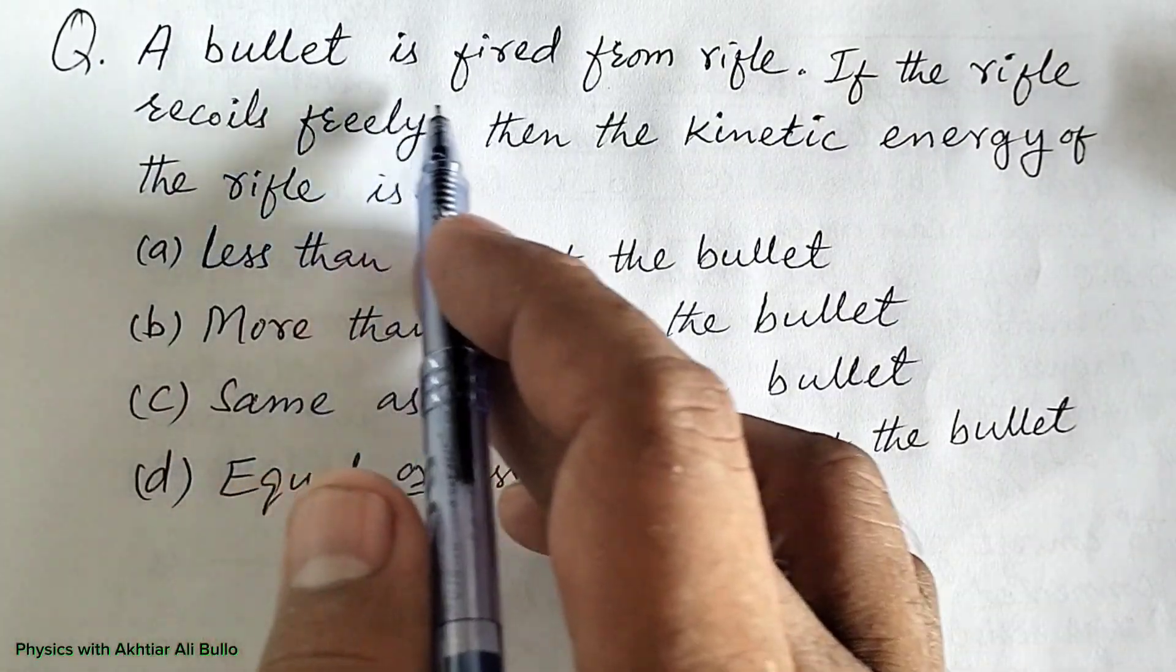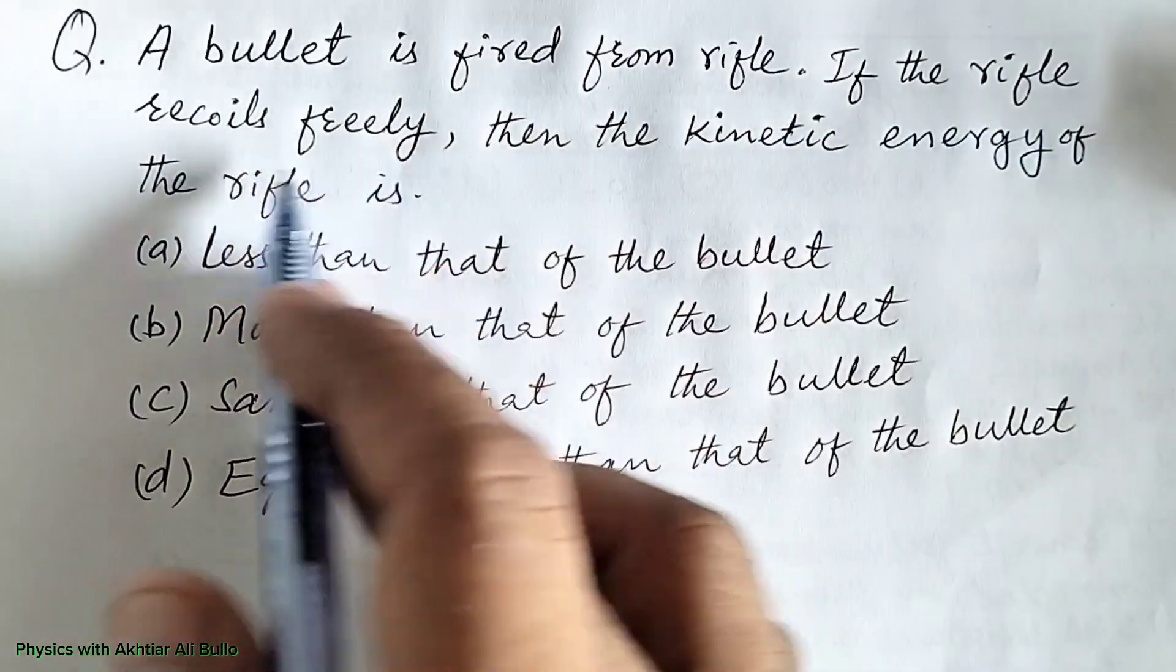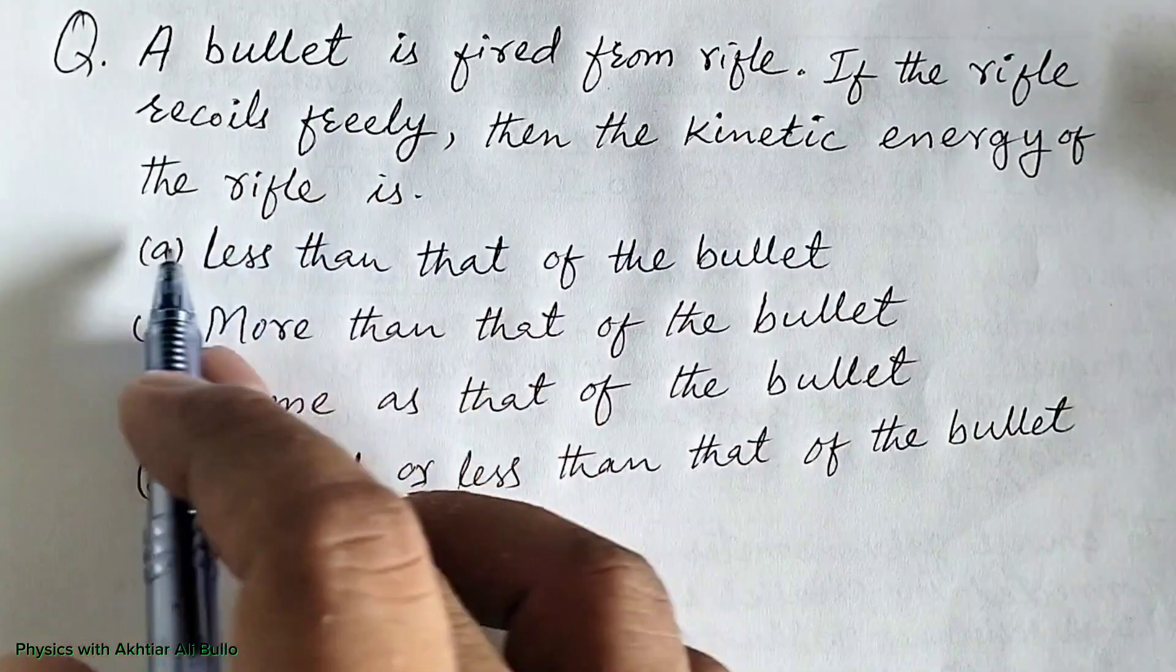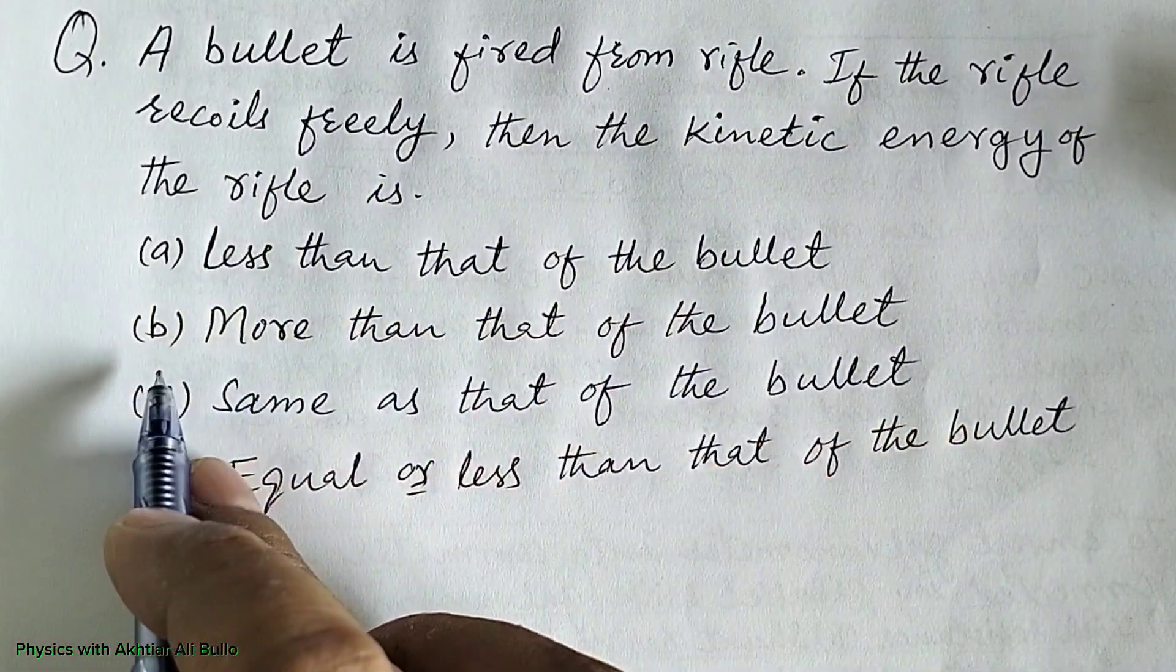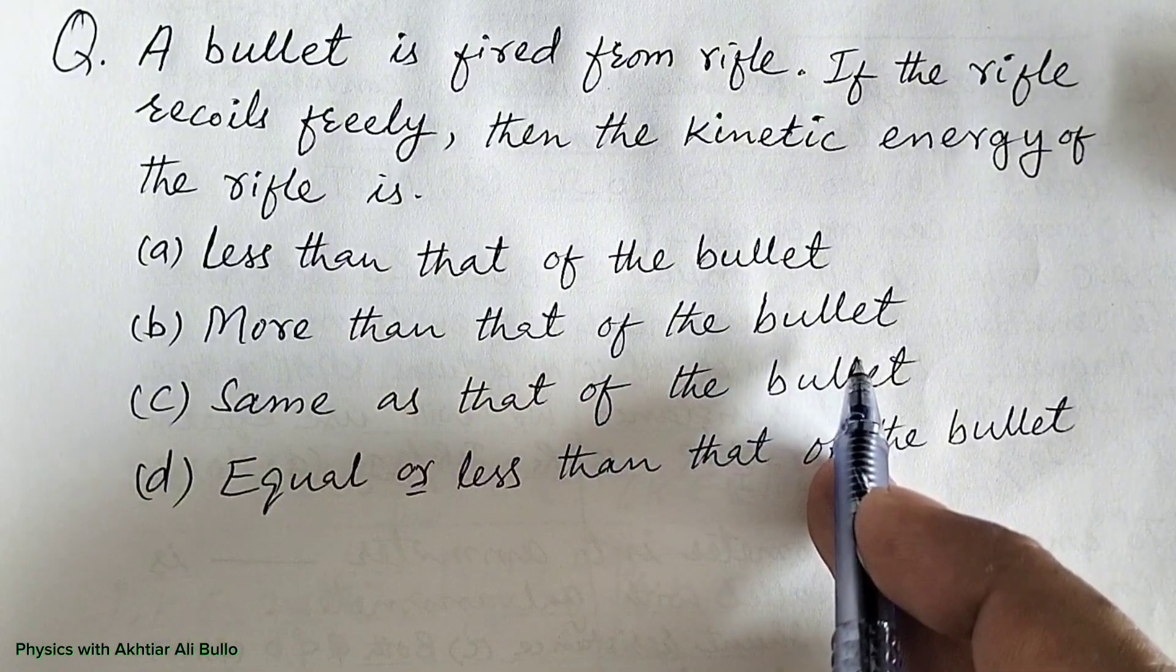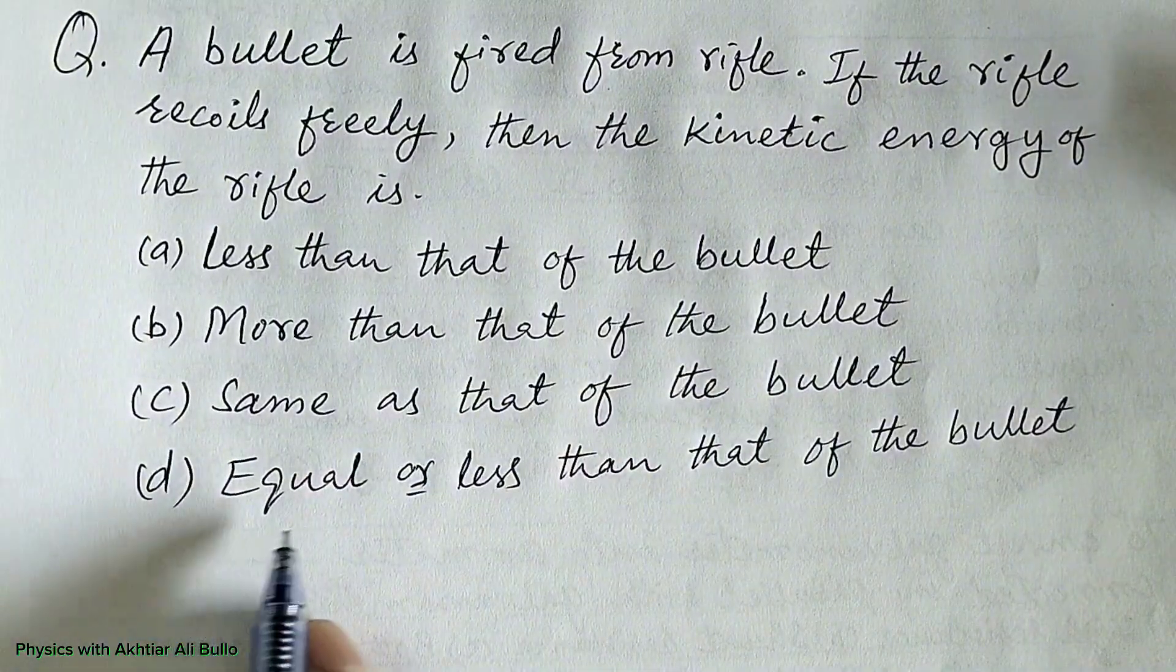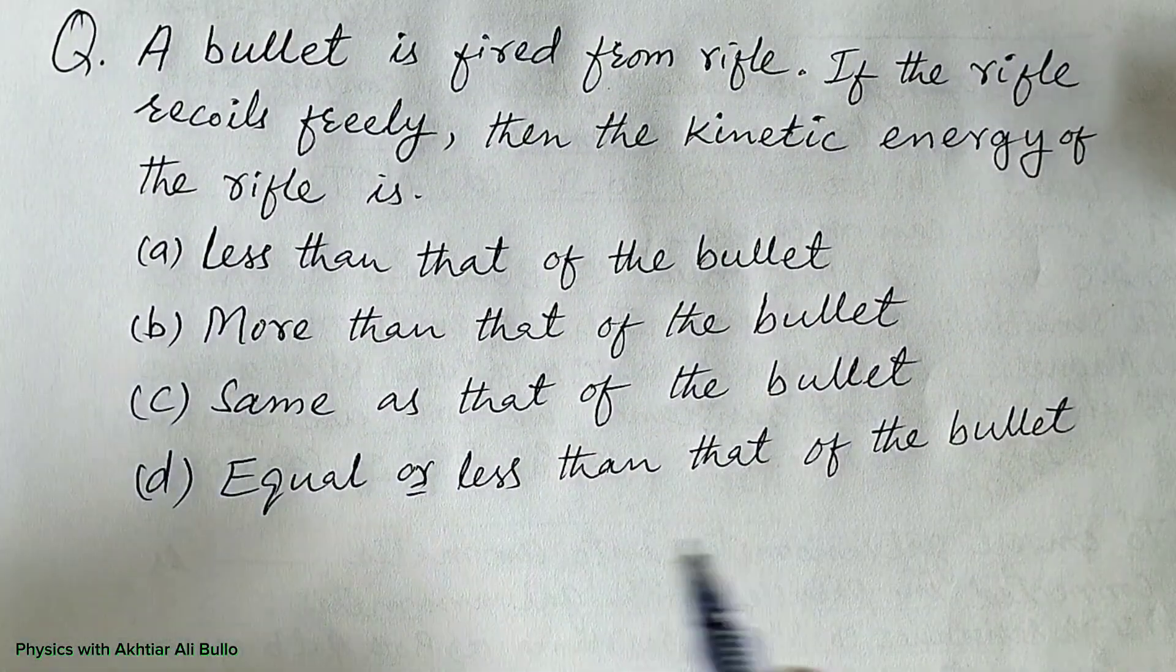The question is, a bullet is fired from a rifle. If the rifle recoils freely, then the kinetic energy of the rifle is: (a) less than that of the bullet, (b) more than that of the bullet, (c) same as that of the bullet, (d) equal or less than that of the bullet.